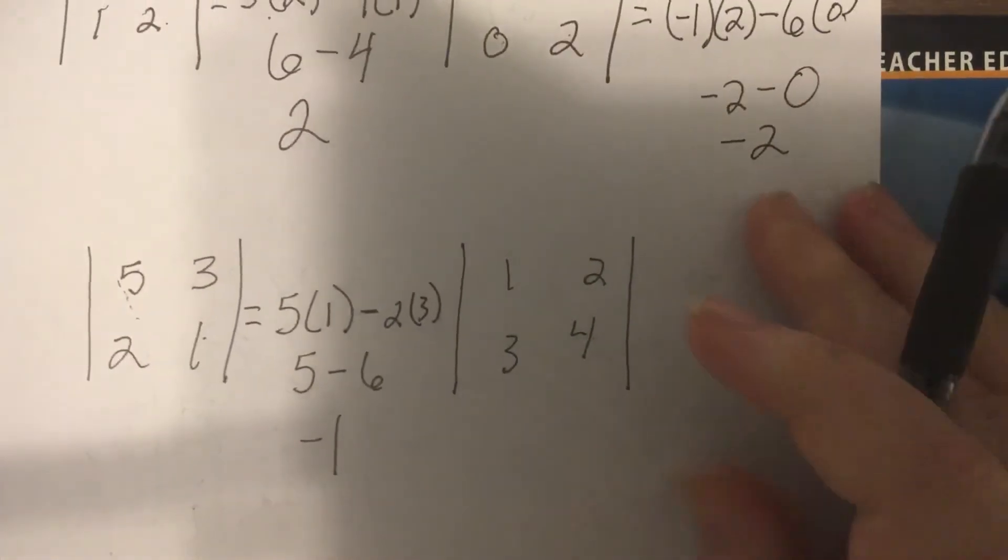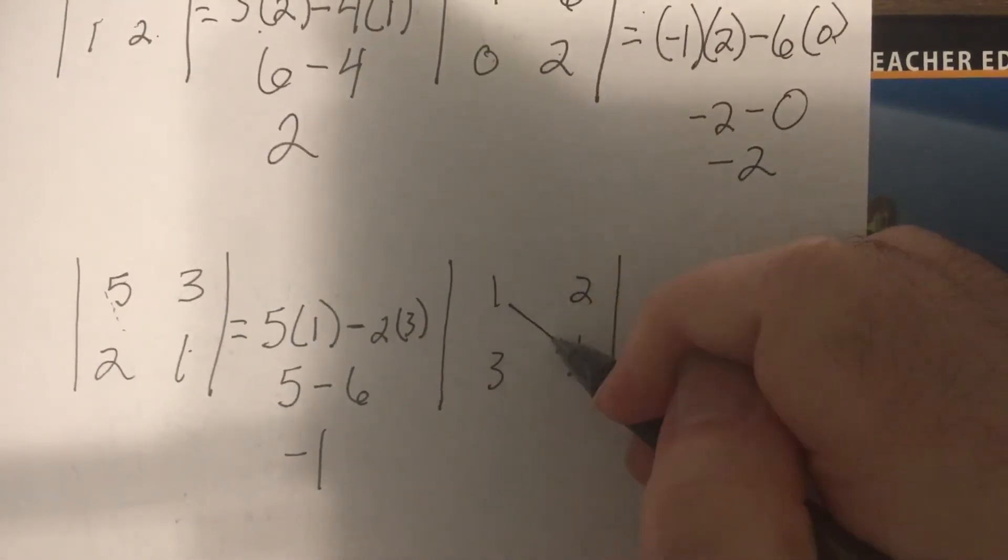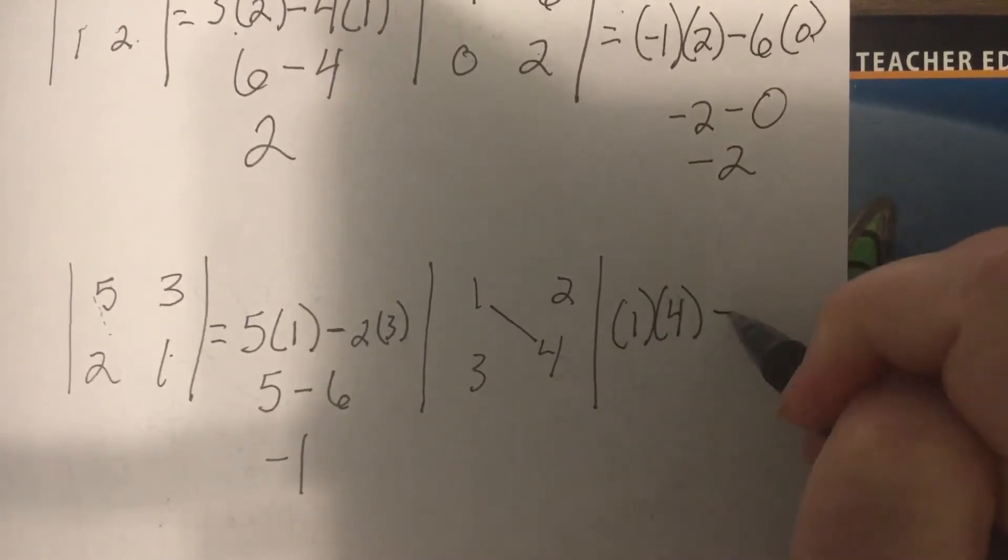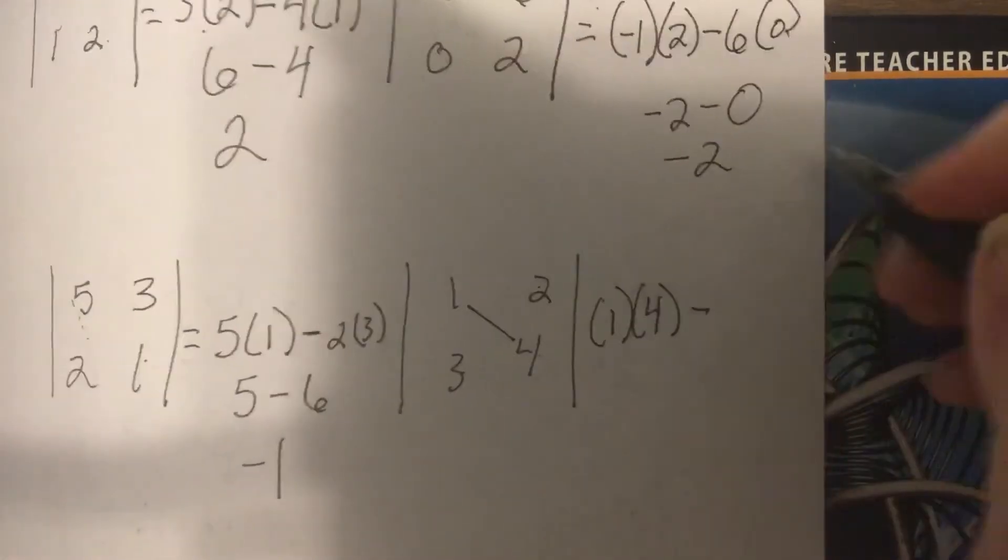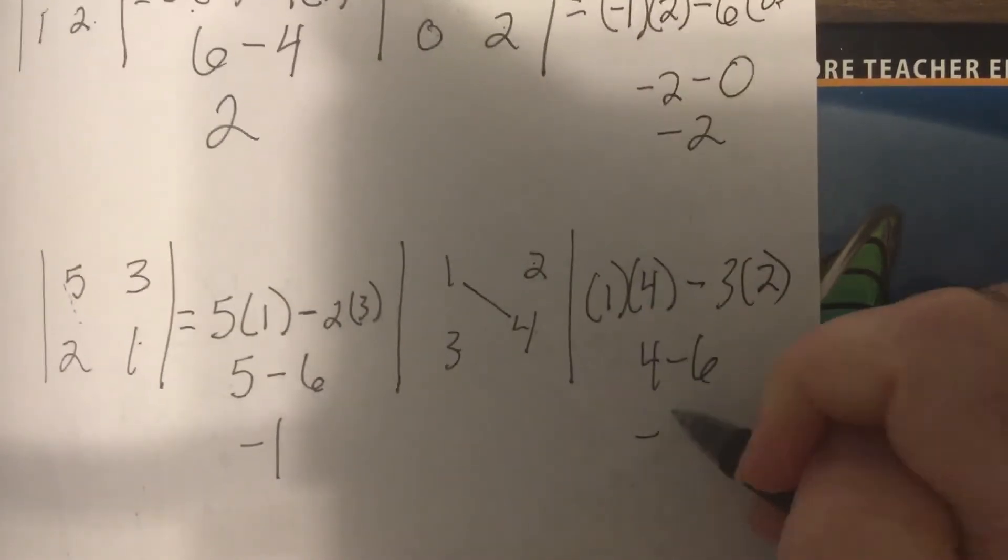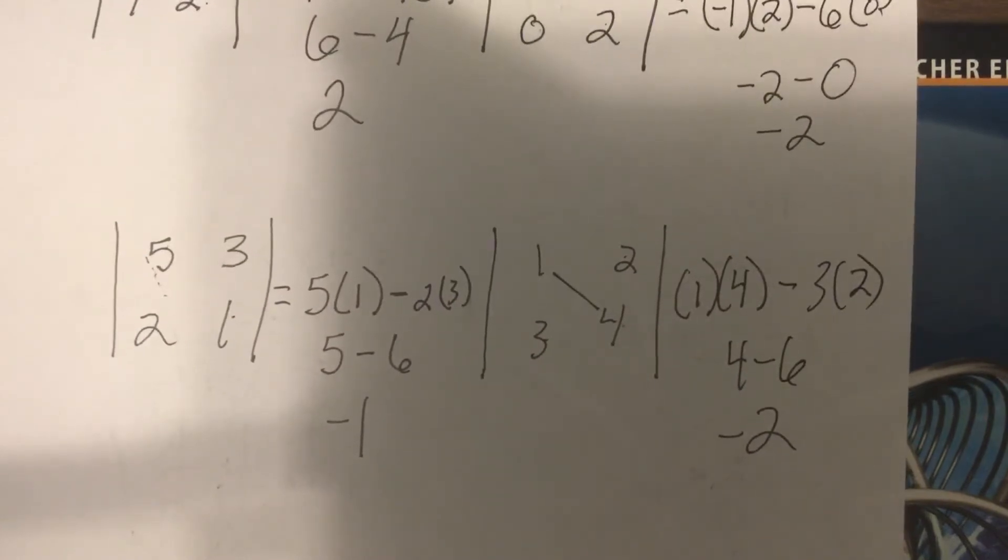Go ahead and try this one for me, please. So 1 times 4, minus 3 times 2. So it'd be 4 minus 6 is negative 2. Okey doke.